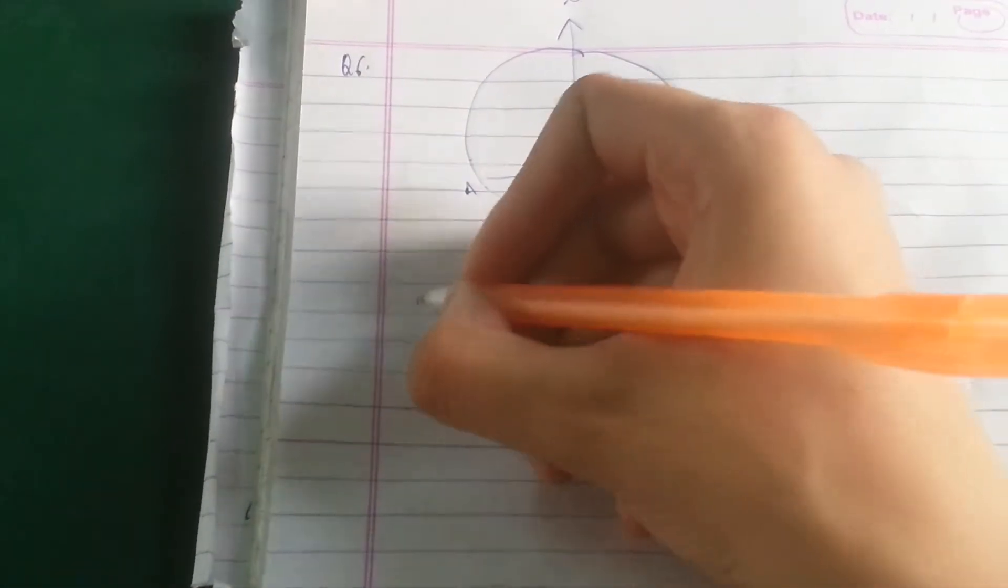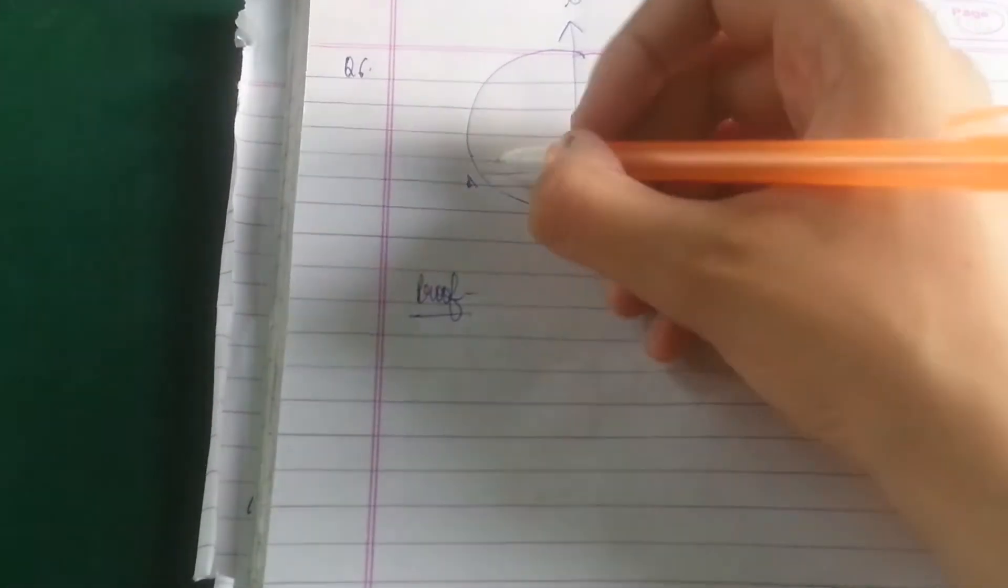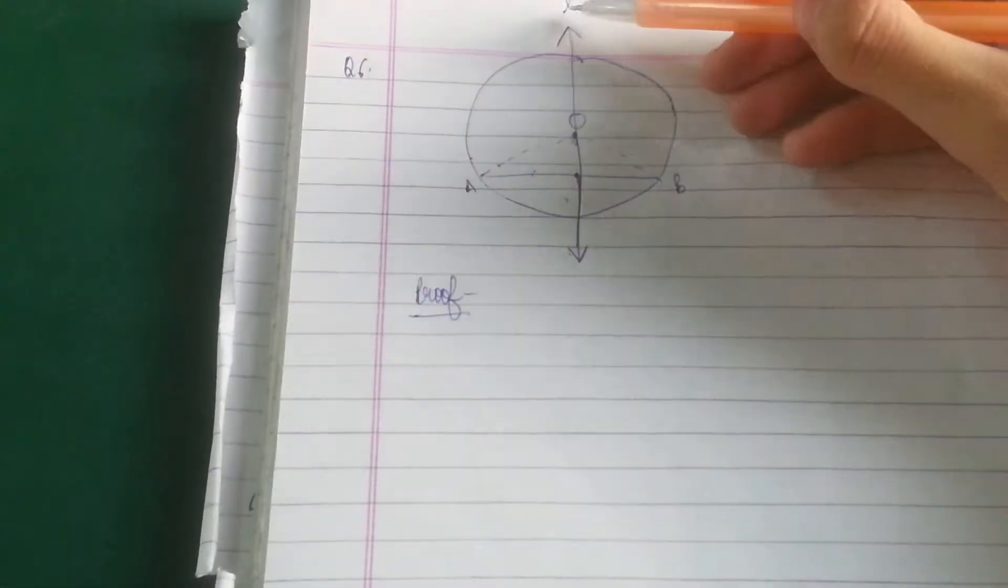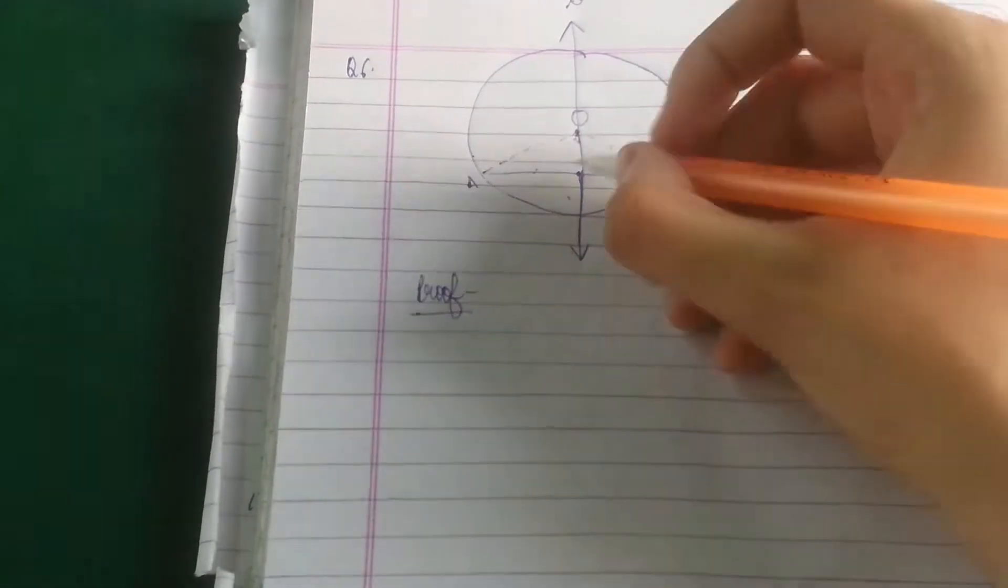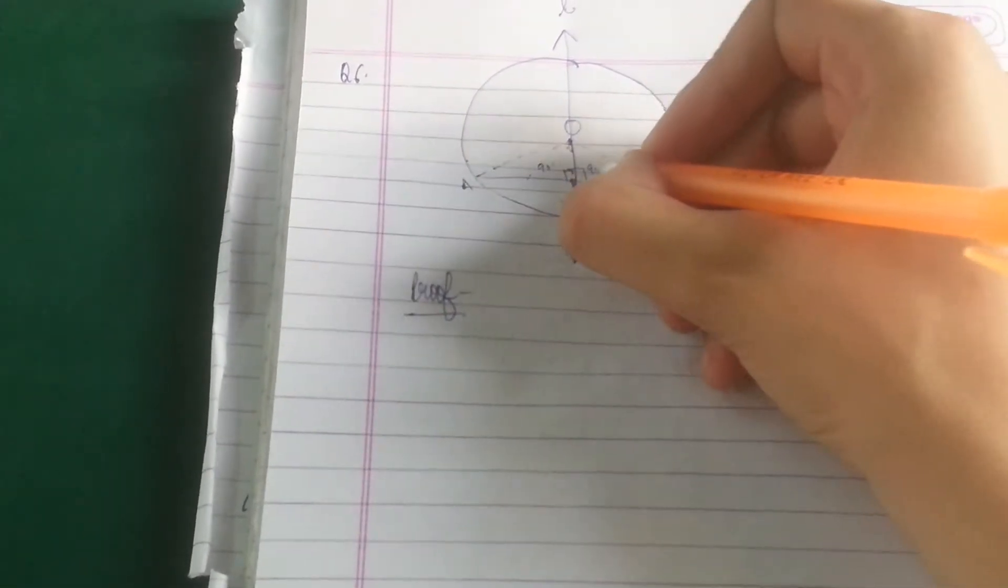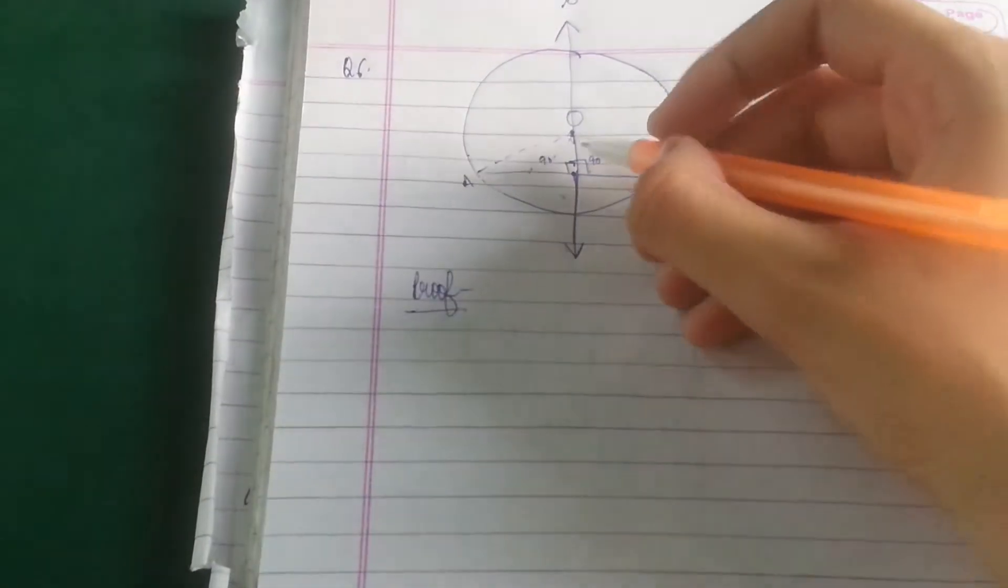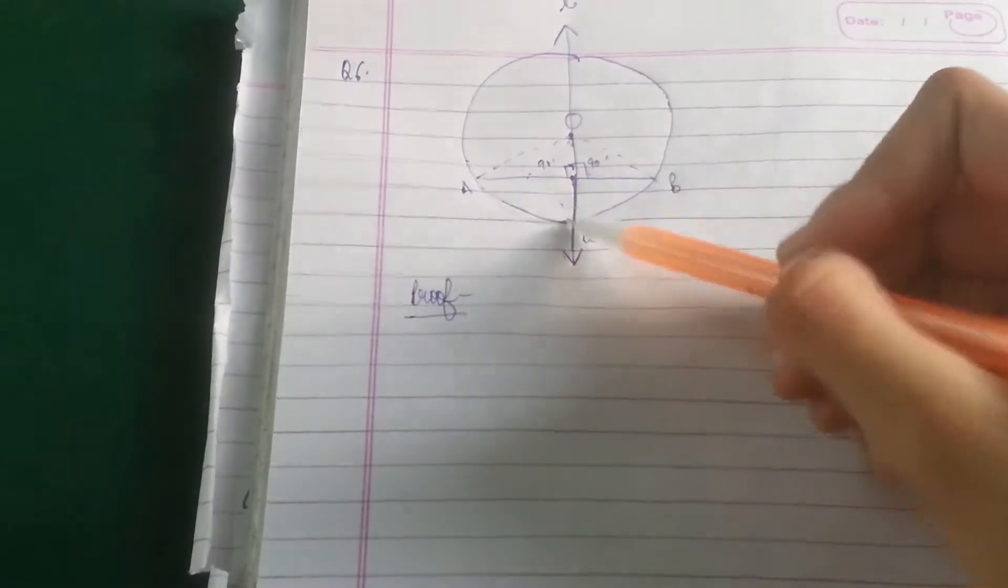So here we will start with the proof. So first of all construction, you have to join AO and OB and you have to suppose that this line L is perpendicular to AB. So it means this angle will be equal to this angle, 90 degrees each. So now we will take these two triangles and basically we have to prove, let's say it's point Q.